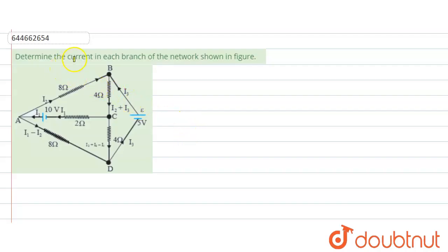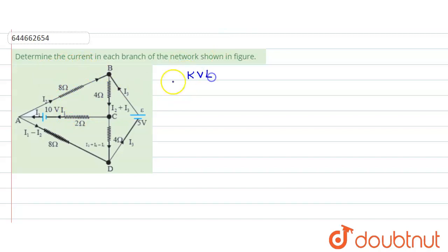In this question, we need to determine the current in each branch of the network. To find the value of the current, we can apply KVL. KVL would be applied in the loop.